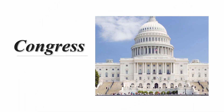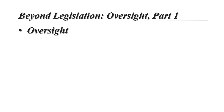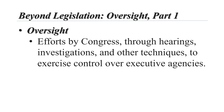Welcome to the last lecture on Congress. Today we're going to be talking about oversight. Congress is expected to oversee the activities of the executive branch. This consists of oversight, which is efforts by Congress through hearings, investigations, and other techniques to exercise some control over the activities of the executive agencies. This is done in order to ensure that funding is spent correctly and that laws are enforced properly.